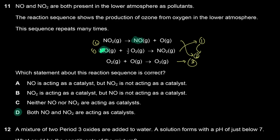The key point is that these two reactions can happen in any order because both NO and NO₂ are present in the lower atmosphere. A catalyst must be present at the beginning of the reaction sequence. Since both are present at the beginning, either can react first, and therefore either can act as a catalyst. So they're both acting as catalysts.